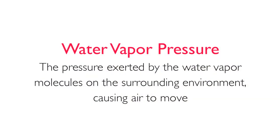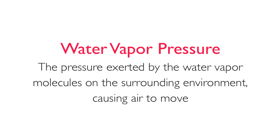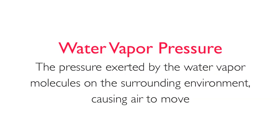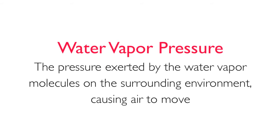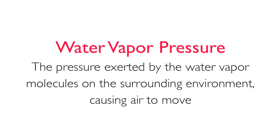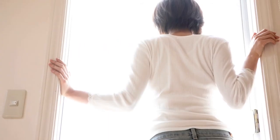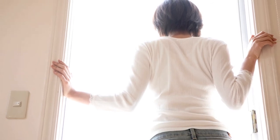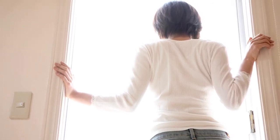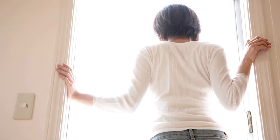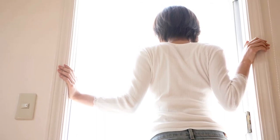Water vapor pressure is the pressure exerted by the water vapor molecules on the surrounding environment, causing air to move. For example, when you open a door to an air conditioned space, water vapor pressure causes the moist air from the outside to be pushed inside.